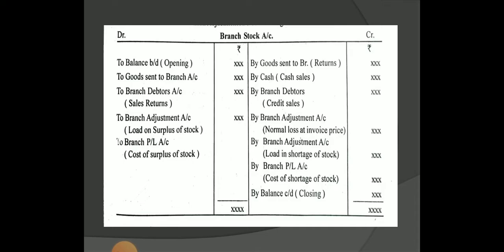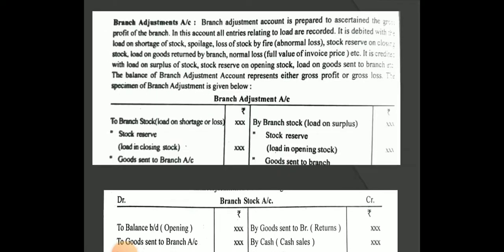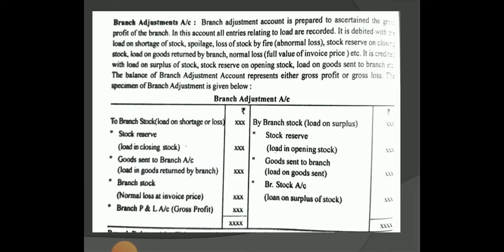This is the branch adjustment account. We can prepare the gross profit and loss account. We carry out profit and loss for loss or shortage of insurance. In the branch adjustment account: on the debit side — load and shortage losses, stock reserves, goods sent to branch, branch stock, and normal loss at invoice price. On the credit side — branch stock, stock reserves, goods sent to branch, branch stock, and loan and surplus stock. A profit is earned in this account.